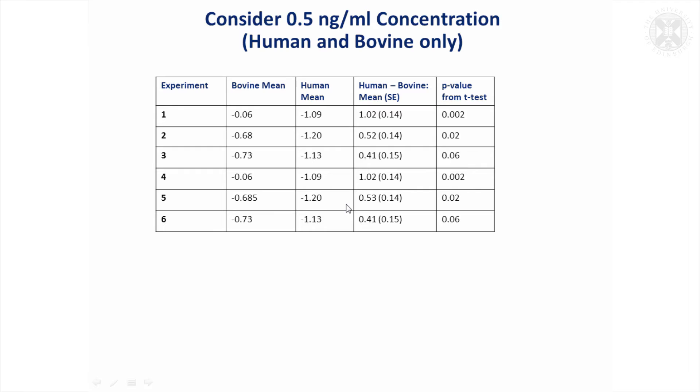It might be tempting first to look at what each of the experiments is telling us. Each experiment has three technical replicates, so each of these means is based on three observations. We can get the difference, and just to make it look a bit neater, I've made this positive so it's easier to look at. You could do a test for each experiment, and if you look at these, there's a difference between the two species, the samples from the two species, which is significant most of the time, not quite significant in experiments three and six.